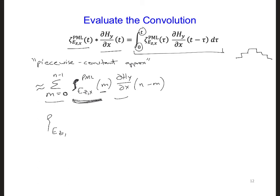So zeta ez x PML is going to be the integration of m delta t to one time step later. This is going to be our approximation of the discrete impulse response of zeta. We integrate zeta over one time step, each of the time steps.